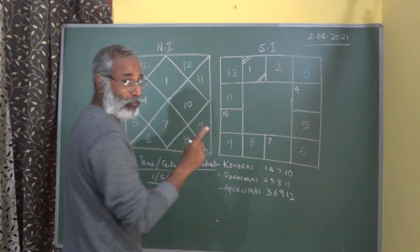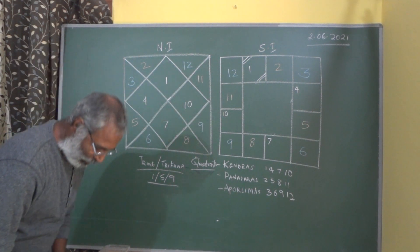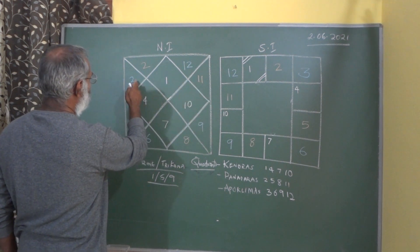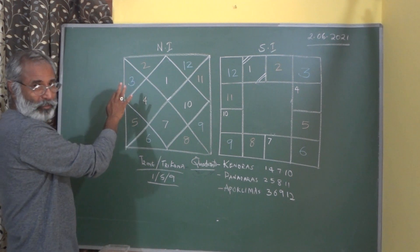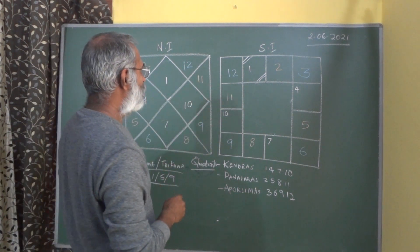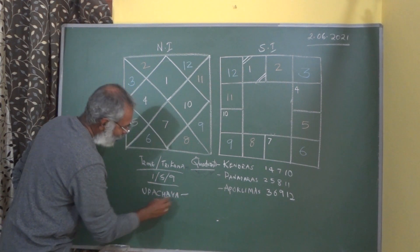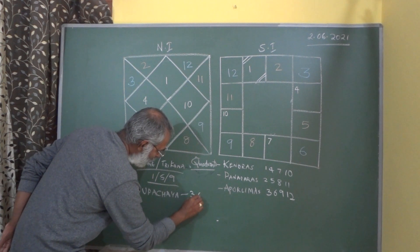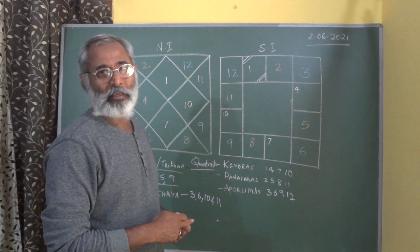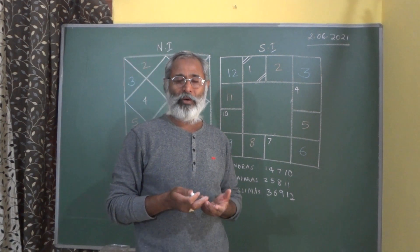The 3rd, the 6th, the 10th and the 11th from the Ascendant — be careful, don't think it is the Gemini sign or any other sign, it is always from the Ascendant. In the North Indian style, the 3rd house, 6th house, 10th house and 11th house are fixed. In the South Indian chart, it depends on the Lagna. The Upachayasthanas are the 3rd, 6th, 10th and 11th — these are the houses of growth.